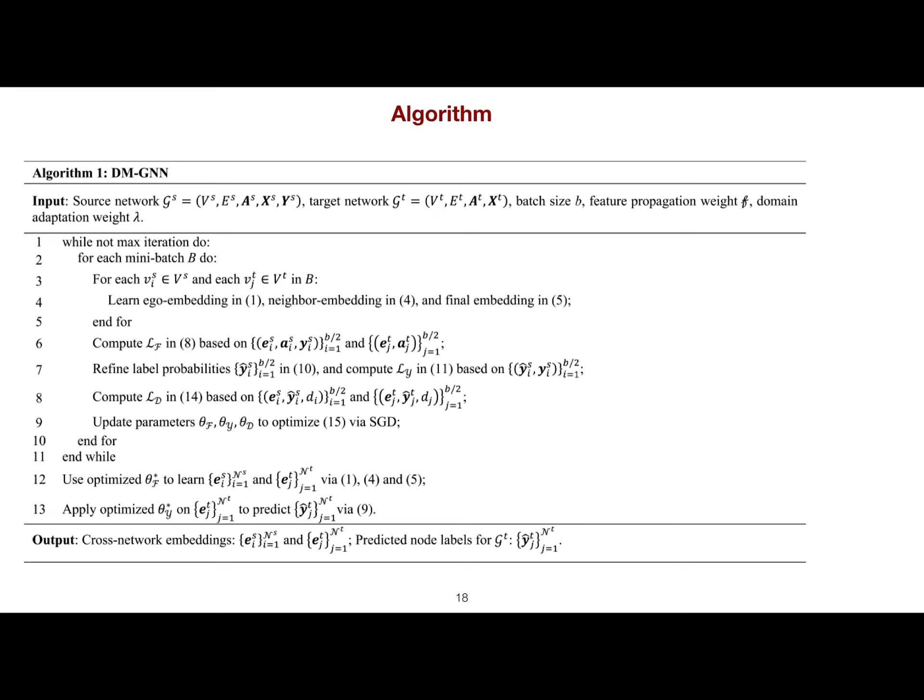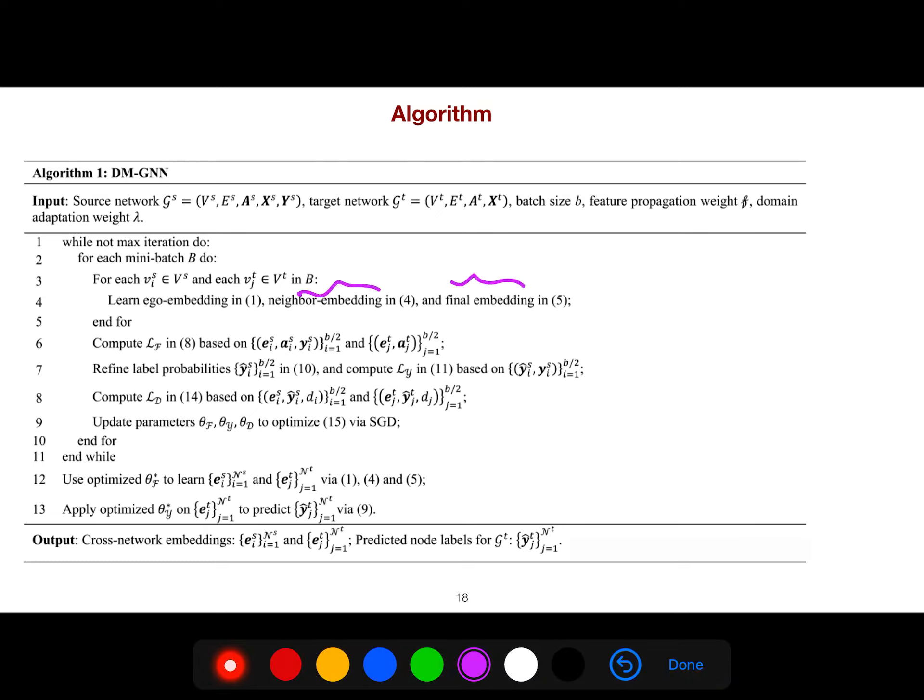So for each V, we learn ego embedding, neighbor embedding, and final embedding. Three embeddings. Then we compute the loss based on the classifier, and then we compute another loss, the loss of the discriminator. And then we update the parameters using stochastic gradient descent. Finally, we have the predicted node labels as well as cross-network embeddings.